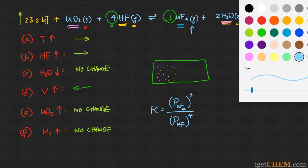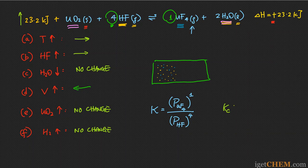You can also write this in terms of Kc, which is expressed in terms of concentrations — using the UF₄ concentration and the HF concentration. The form of the expression is the same; in one we use partial pressures, in the other we use concentrations. These are equally good ways of expressing the equilibrium constant, and there is a relationship between the numerical value of Kp versus Kc that you can find in another video on our channel.